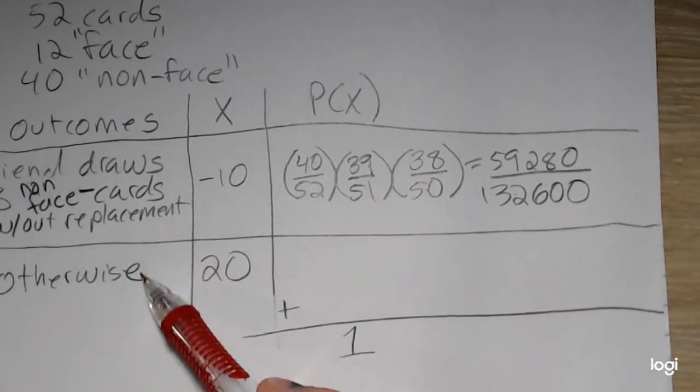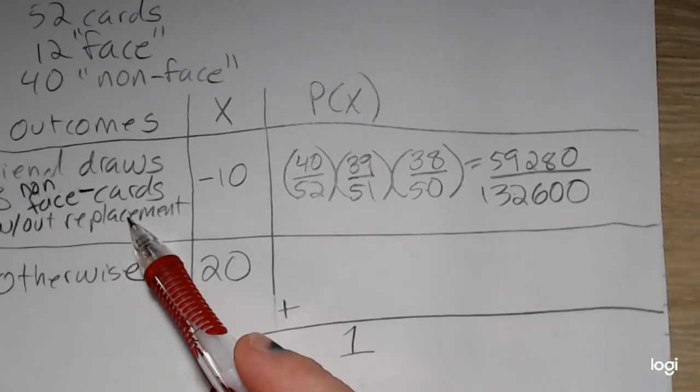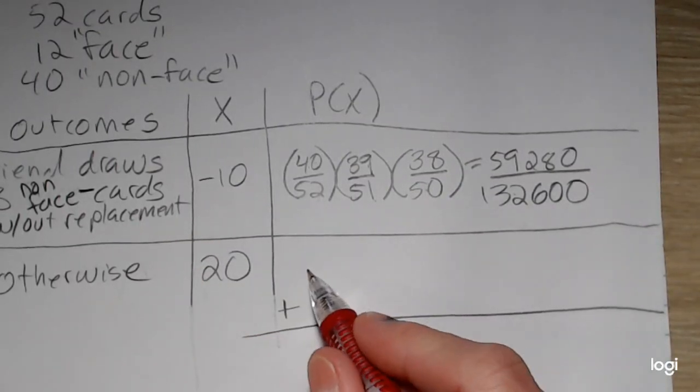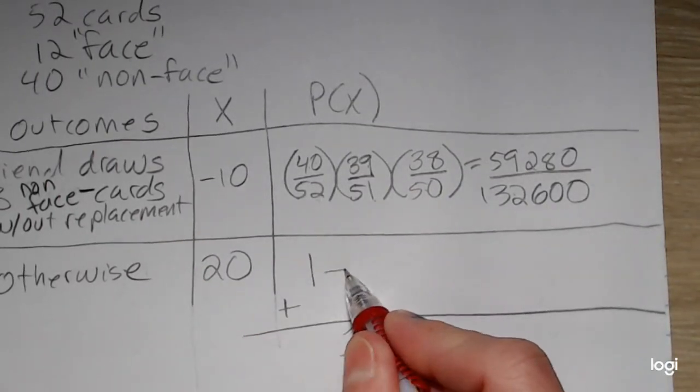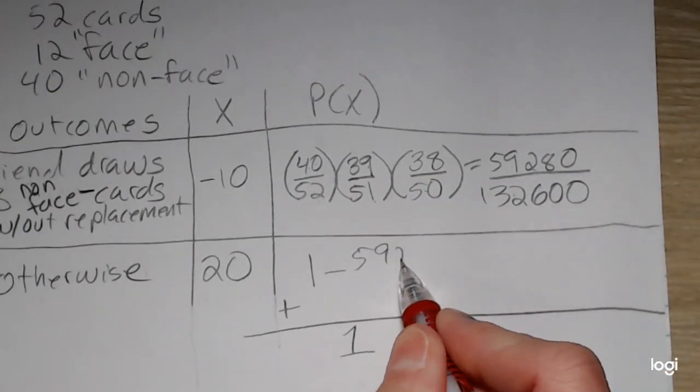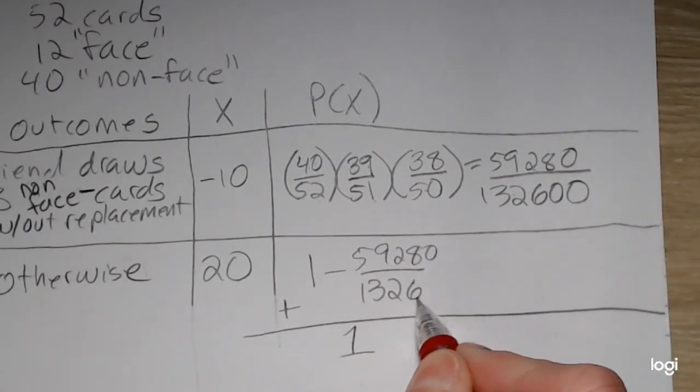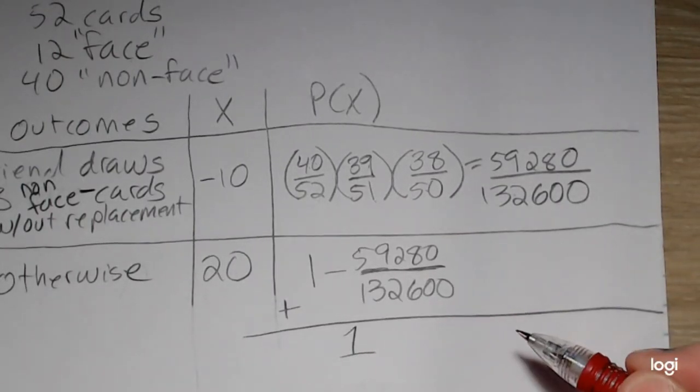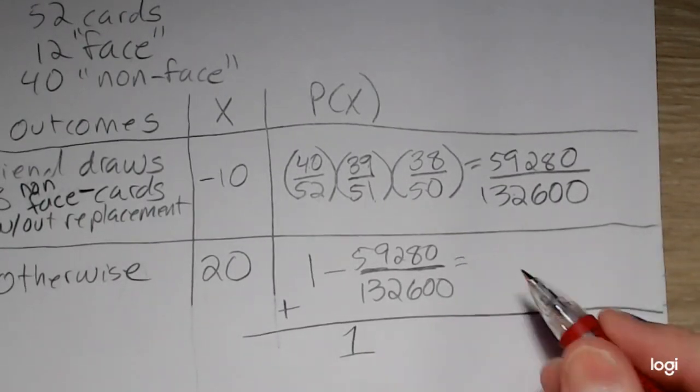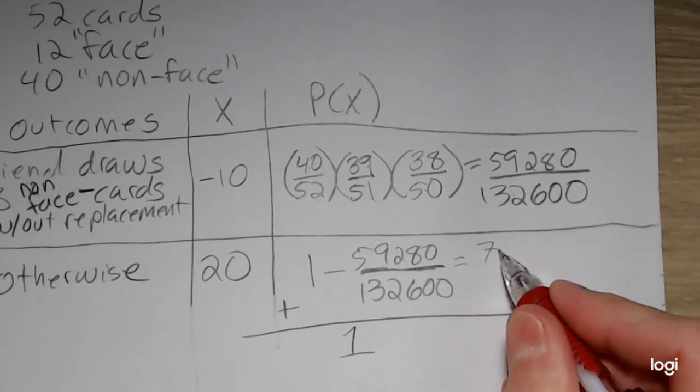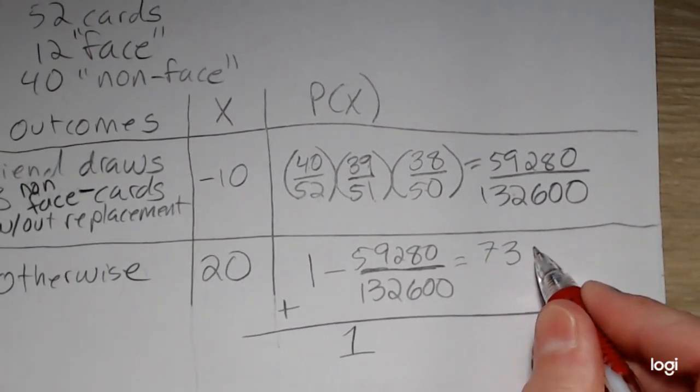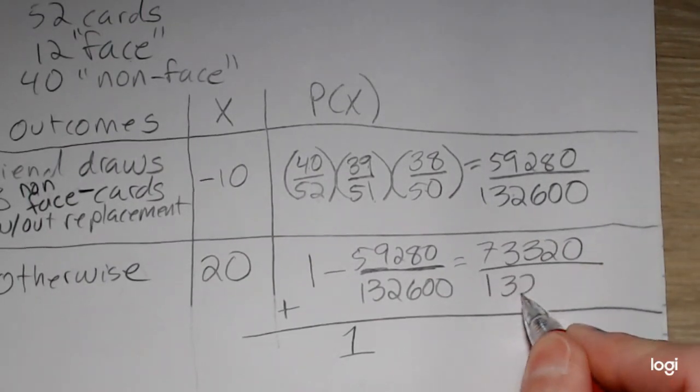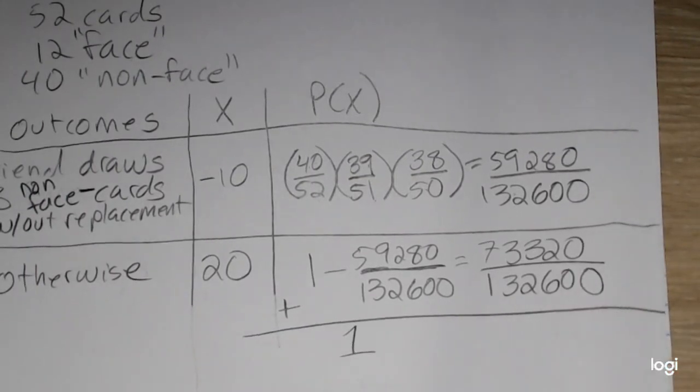either he draws three non-face cards, or he does not, is going to be 1 minus this probability. So it's much easier to use complementary events, the rule of complementary events in this case. So doing that subtraction, I get 73,320 over 132,600.